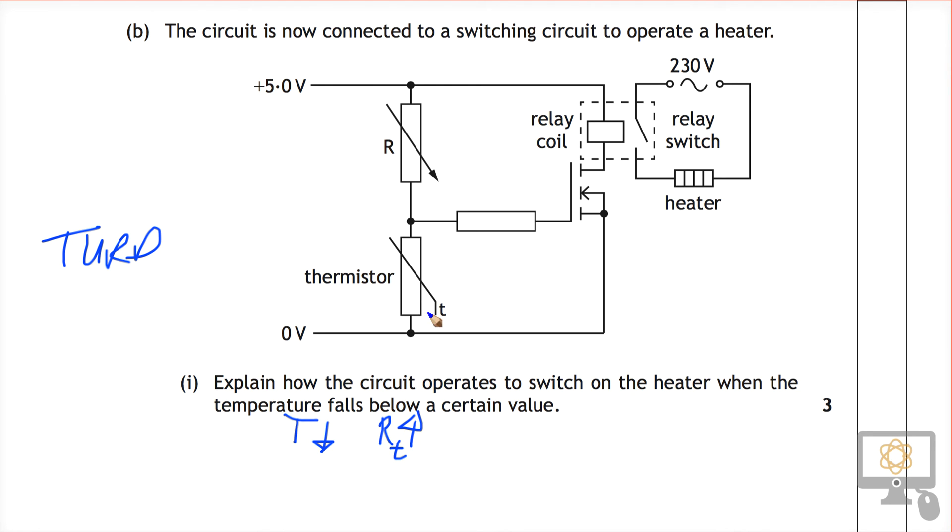So then the second statement relates to, well, if that thermistor rises, sorry, if its resistance rises, what effect does that have on the rest of the circuit? Well, the key part is, this is a MOSFET. The MOSFET requires a voltage of about 2 volts to switch on.